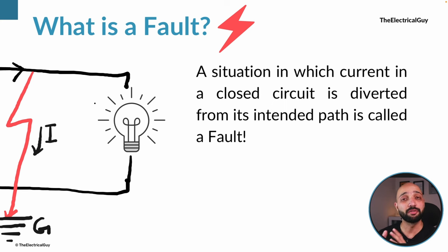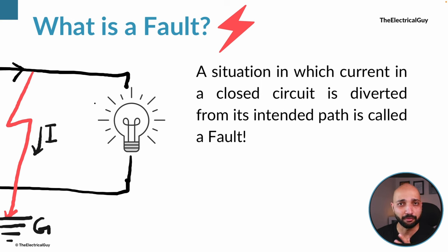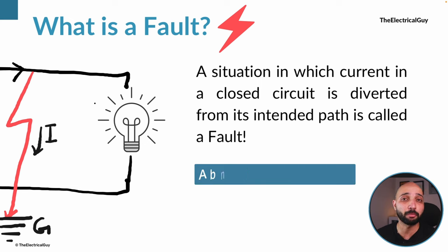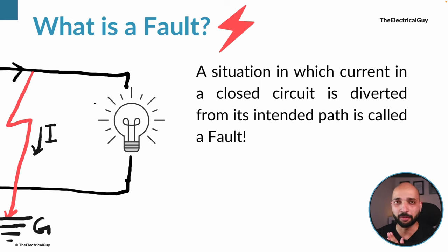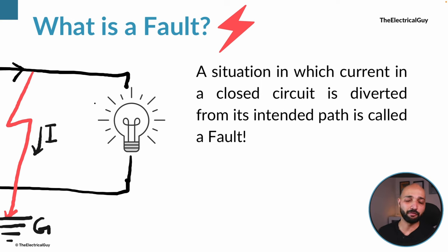Since the fault impedance is very low, the amount of current in case of a fault becomes very high, and we call that an abnormal condition. It can reach many kilo amperes. That is what we call a fault in simple language.